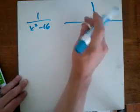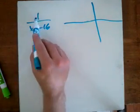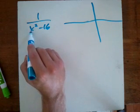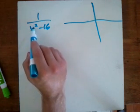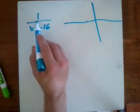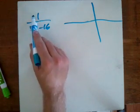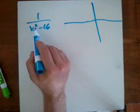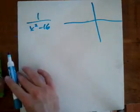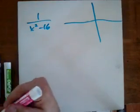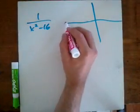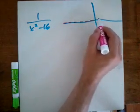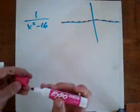Let's apply our three rules that we had. The degree of the numerator is 0, and the degree of the denominator is 2. So we have one where the degree of the numerator is less than the degree of the denominator. That says that our horizontal asymptote is going to be right here on 0. So I'll put that horizontal asymptote in there.